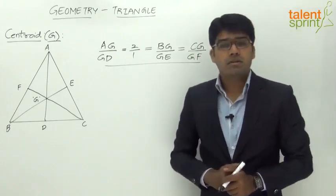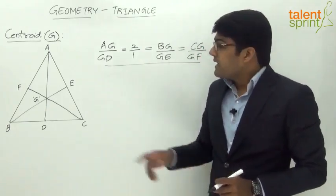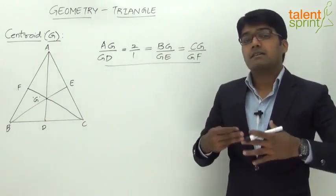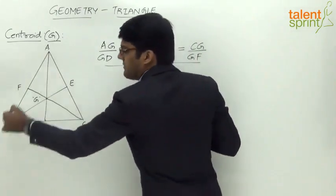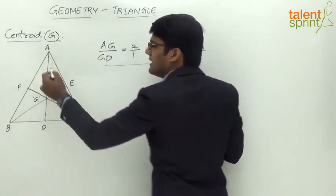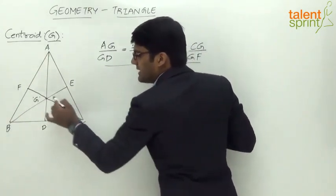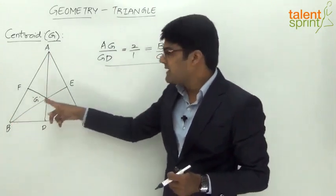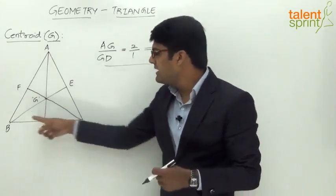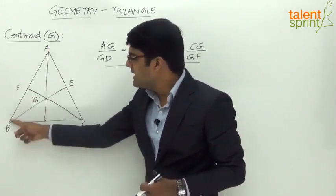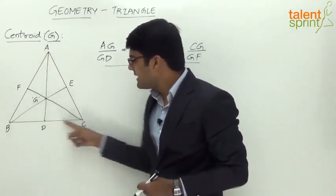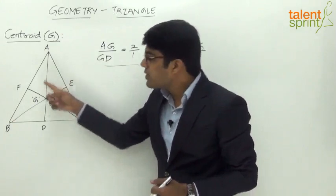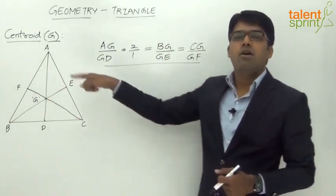Another important point: looking at centroid G and the three vertices of triangle ABC, we get three smaller triangles within the original triangle. The first triangle is ABG, the second is ACG, and the third is BCG. These three triangles, each formed by two vertices of the original triangle and the centroid, together make up the original triangle ABC.